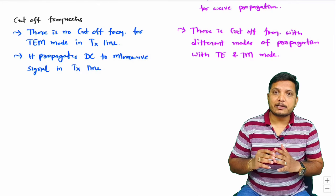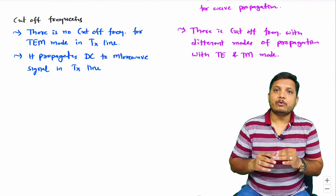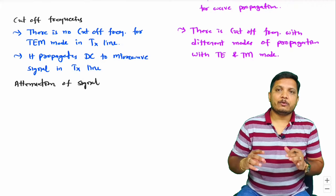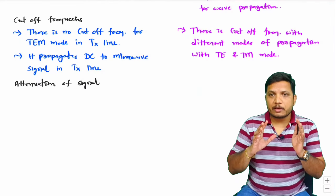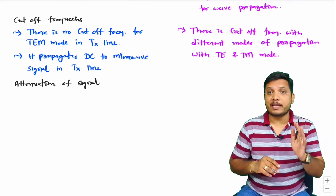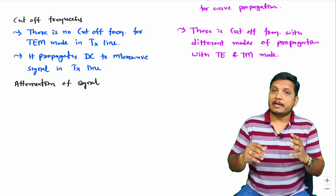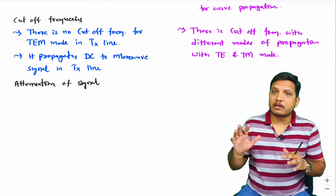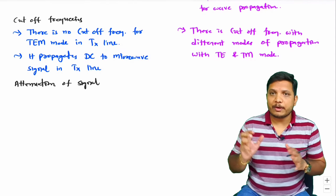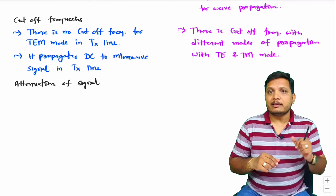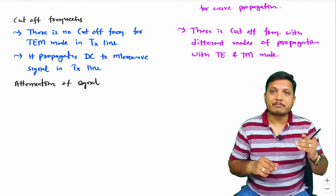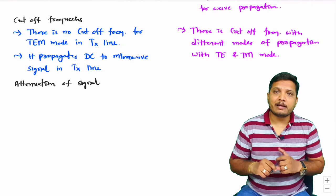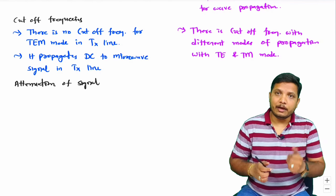Now let us discuss attenuation of signal through transmission line and waveguide. Attenuation of signal is very high with transmission line, but with waveguide, attenuation of signal is less. The reason is that in waveguide, the signal propagates based on internal reflection, while in transmission line, the signal propagates based on impedance matching and coupling. So attenuation of signal is higher in transmission line compared to waveguide.